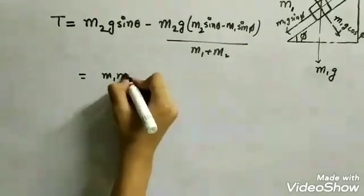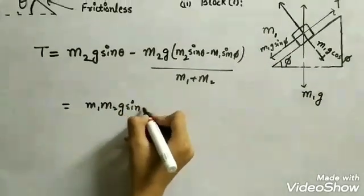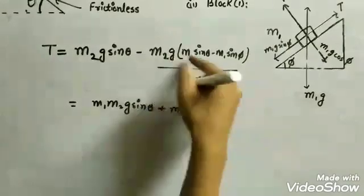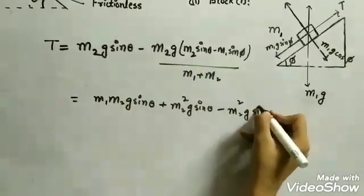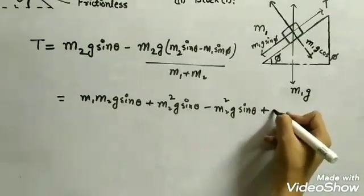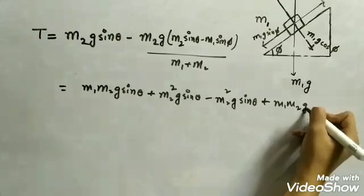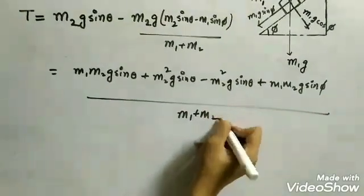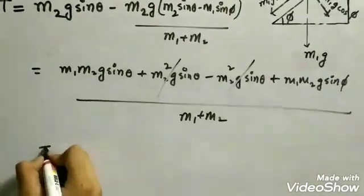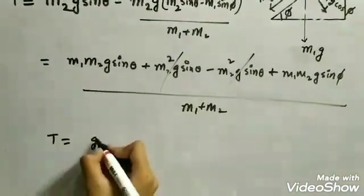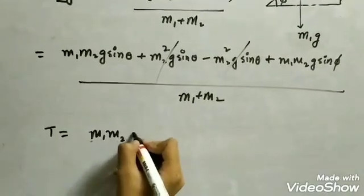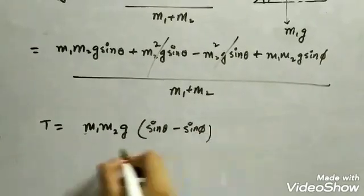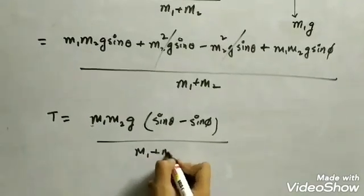Expanding the brackets and simplifying, the m2² g sin theta terms cancel out, leaving us with tension T = m1 m2 g sin theta plus m1 m2 g sin phi, all divided by (m1 + m2). This simplifies to T = m1 m2 g (sin theta + sin phi) divided by (m1 + m2). Wait — combining correctly, T = m1 m2 g (sin theta + sin phi) / (m1 + m2). This is the required value of the tension.